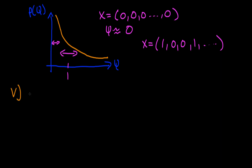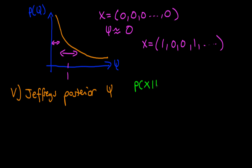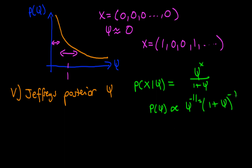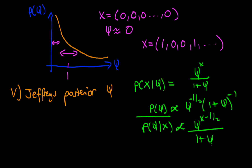All that remains is to work out the Jeffrey's posterior in terms of psi. The likelihood p of x given psi equals psi to the power x over 1 plus psi, and Jeffrey's prior is proportional to psi to the minus one-half times (1 plus psi) to the minus one. The posterior p of psi given x is therefore proportional to psi to the power x minus one-half over (1 plus psi) squared.